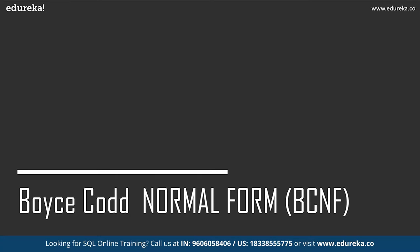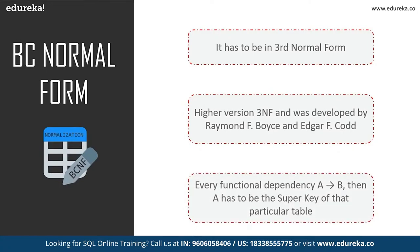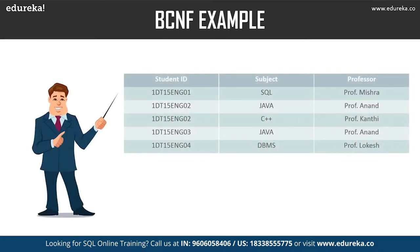Now we proceed to Boyce-Codd normal form, also known as 3.5 normal form. It is a higher version of third normal form, developed by Raymond F. Boyce and Edgar F. Codd to address anomalies not dealt with by third normal form. The table must satisfy third normal form first. In Boyce-Codd normal form, for every functional dependency A implies B, A must be the super key of that table. A super key is a group of single or multiple keys which identifies rows in a table.